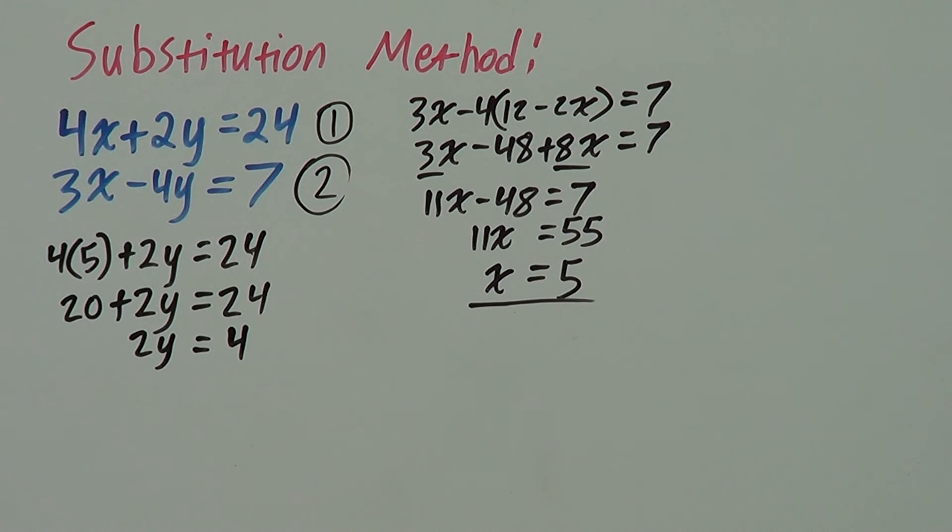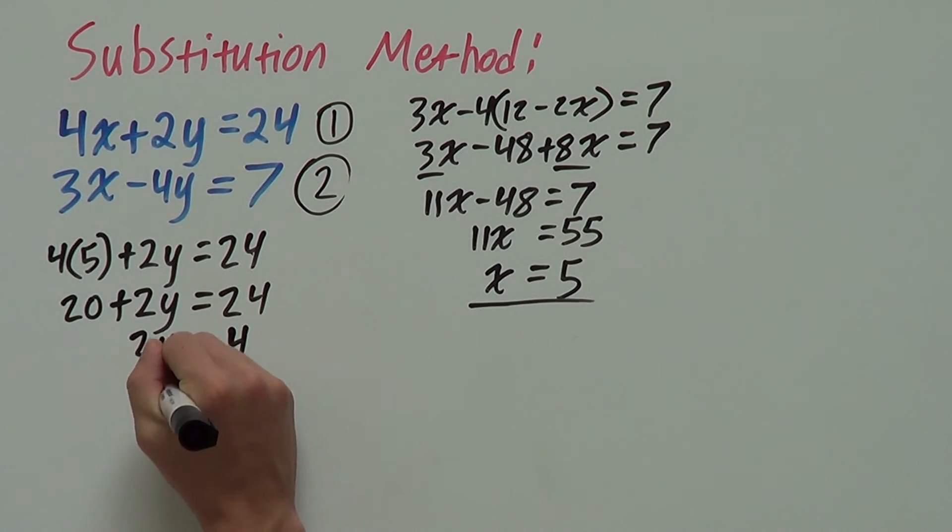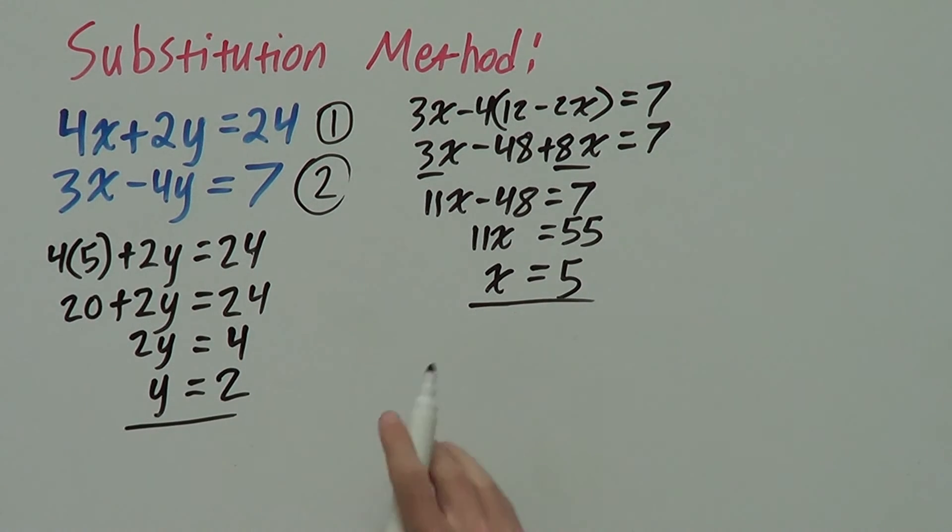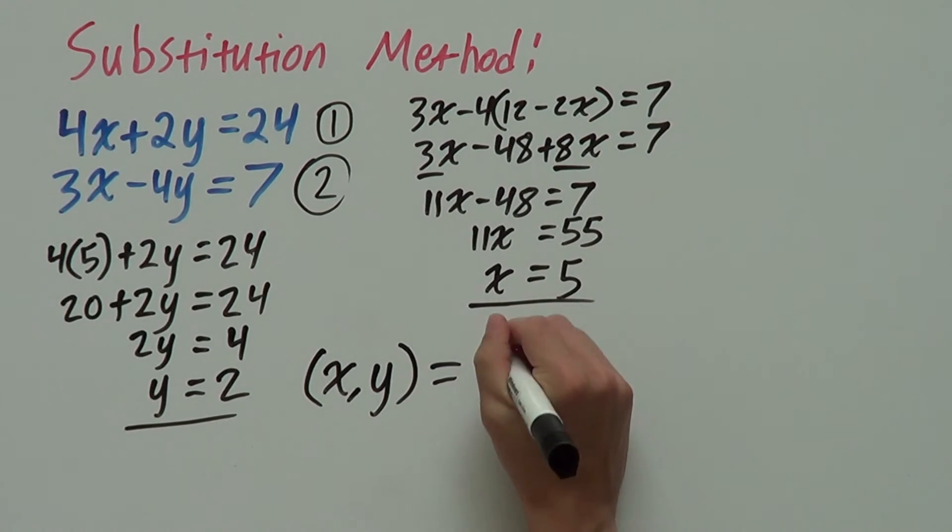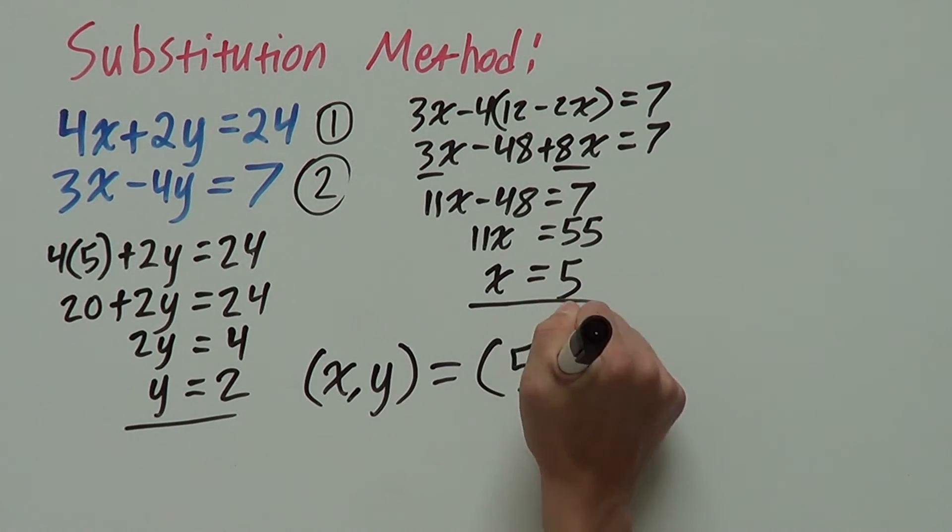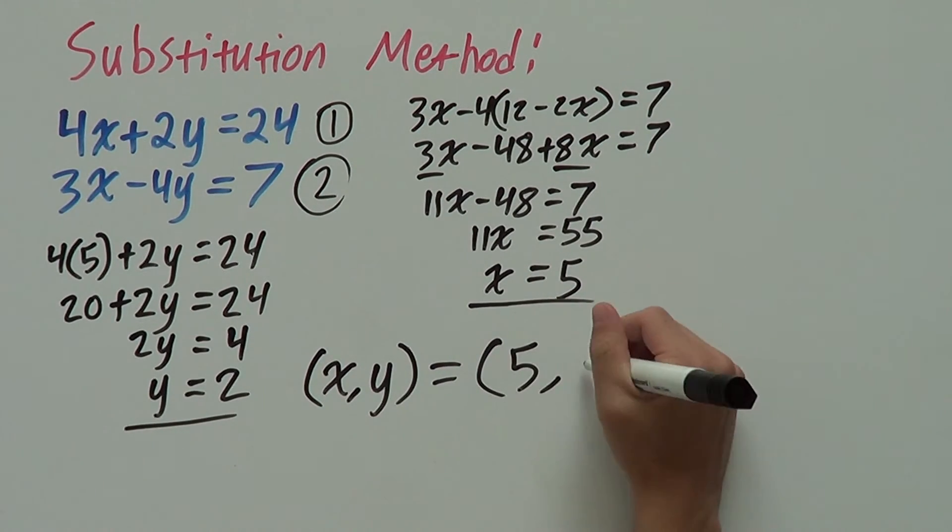And now we want y by itself. So, we divide 2 from both sides giving us y equals 2. And now we have our x and our y values. So, we have found our x and y values. So, the coordinates for the solution are x and y equals, x is 5 and our y is 2.